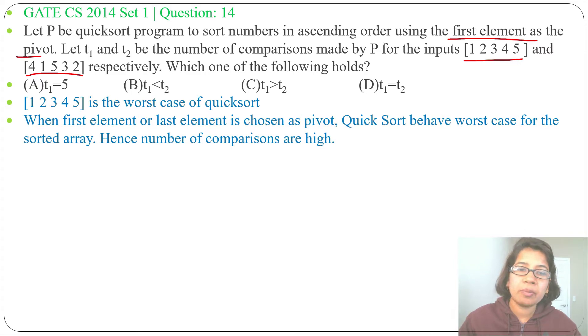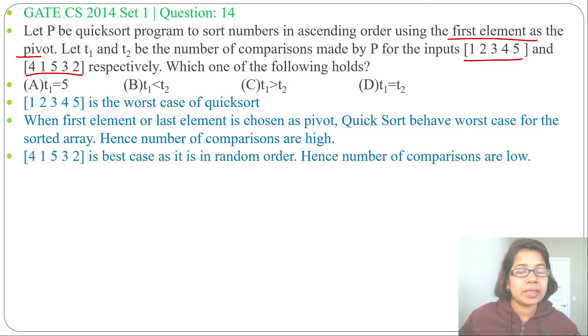So t1 has more comparisons. Then [4 1 5 3 2] is in random order, so we can see it is a best case, and for best case we require less comparisons.